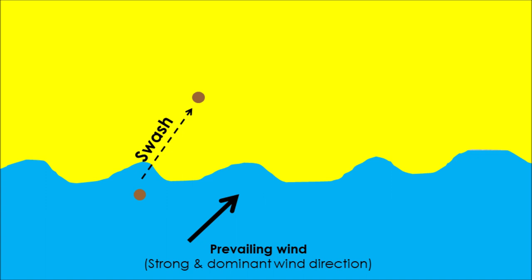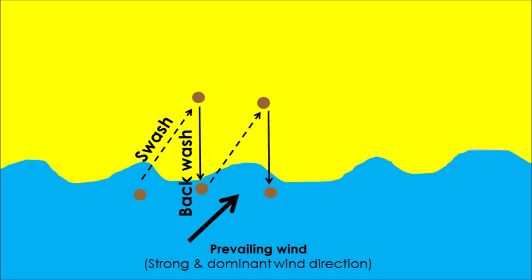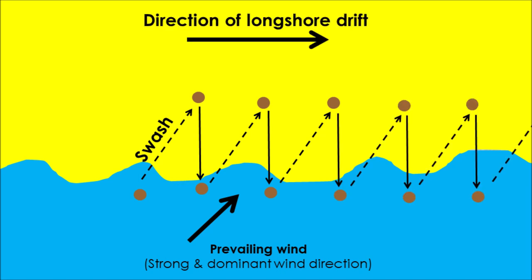But when the wave retreats and moves back into the sea or ocean, it will pick that sediment up sometimes and drag it back down through backwash. Over time, this process is repeated — swash and backwash, swash and backwash — until that sediment, pebble, or sand moves further along the coastline. This tells us the direction of longshore drift: the direction the sediment is being moved down the coastline.